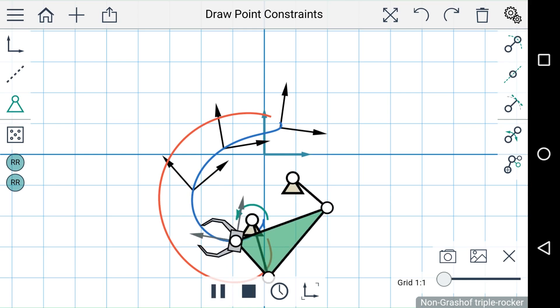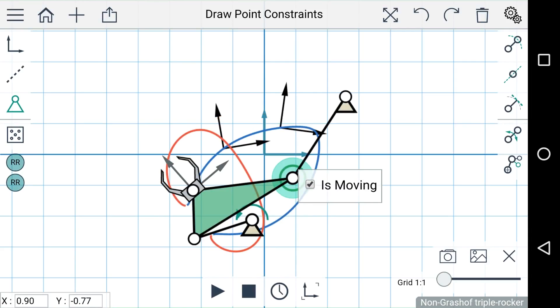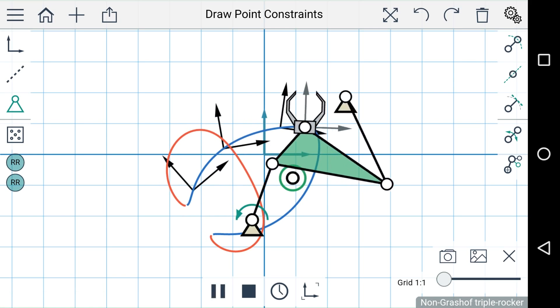Now if you'd like, you can actually modify these point constraints. If you double-tap on one of them, a little dialog pops up that says 'is moving.' Now if I check this box, you can see that the linkage has changed so that now the moving pivot actually passes through this point instead of the ground pivot.